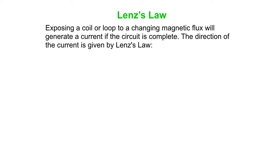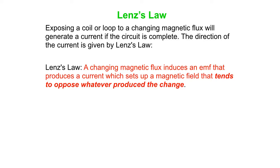Faraday's Law was all about that, but the direction of the current is given by Lenz's Law. This pertains to the minus sign in Faraday's Law. Lenz's Law says: a changing magnetic flux induces an EMF — a voltage — that produces a current which sets up a magnetic field that tends to oppose whatever produced the change. This opposing tendency is why Faraday's Law has that minus sign. The induced EMF is minus N delta flux over delta T.